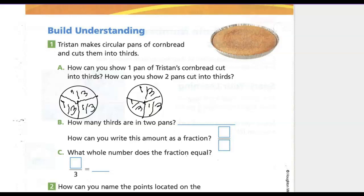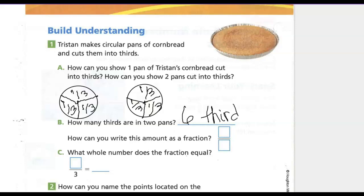How many thirds do we have all together? How many thirds are in two pans? Well, there's one, two, three in the first pan and three in the second pan. Three plus three makes six thirds. This looks a little different because our fraction is larger on the top. So we've got six thirds.